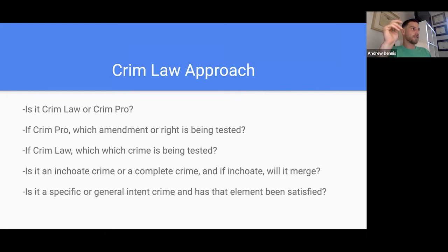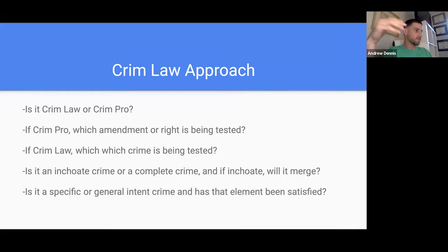One thing interesting about attempt that I've seen many times: factual impossibility will not be a defense. Just because you tried to do something and it was factually impossible to complete doesn't matter. If it's a lawful impossibility — maybe your attorney told you it was lawful — maybe that's different. But factual impossibility, like you were trying to shoot somebody but your bullet didn't go that far — it's still attempted murder, even though there's a factual impossibility.